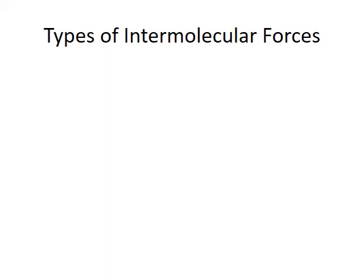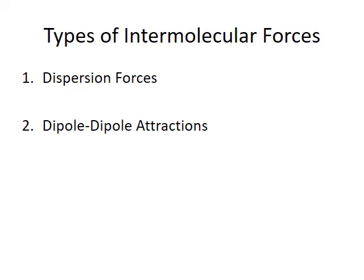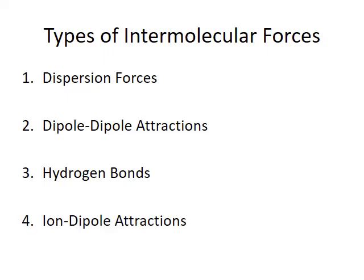We generally talk about four different types of intermolecular forces, ranked from weakest to strongest attraction. Dispersion forces are found between nonpolar molecules or atoms. Polar molecules have a permanent separation of charge, also known as a dipole, and interactions between polar molecules are known as dipole-dipole attractions. Hydrogen bonds are a special class of dipole-dipole attractions that form when hydrogen is directly bound to nitrogen, oxygen, or fluorine. Finally, ion-dipole attractions are the strongest, developing between the full charge of dissociated ions and the partial charges on polar molecules.